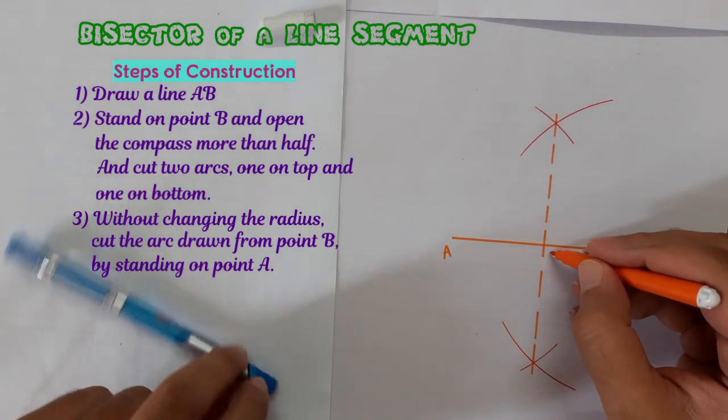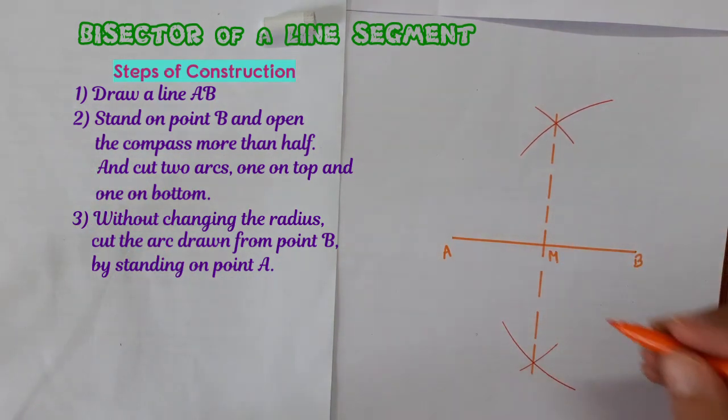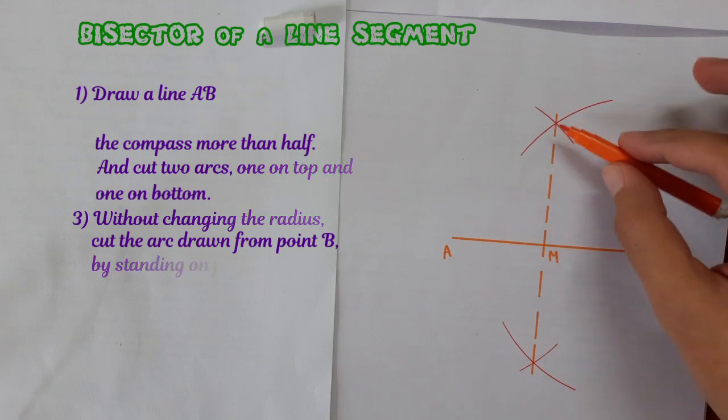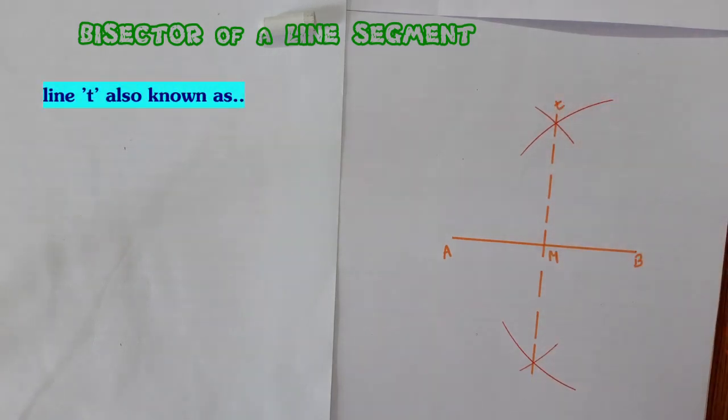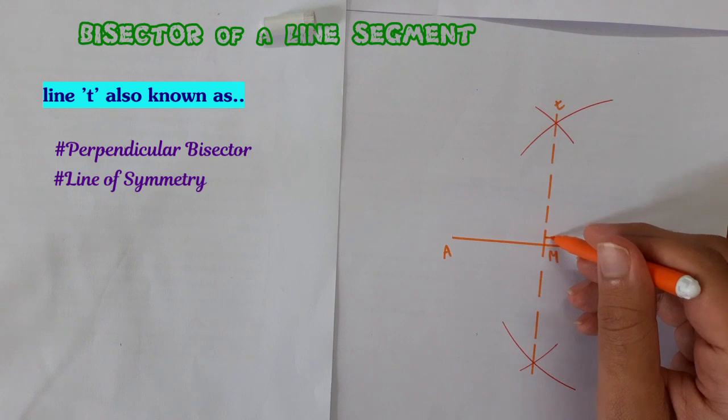That's it. So we can take it as M. This line I call it T. This line T is called the bisector of the line. This is also known as perpendicular bisector because it is always at 90 degrees.